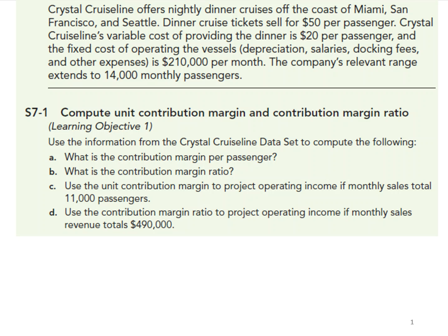Let's do a CVP analysis question. Crystal Cruise Line offers nightly dinner cruises off the coast of Miami, San Francisco, and Seattle. Dinner cruise tickets sell for $50 per passenger. Crystal Cruise Line's variable cost of providing the dinner is $20 per passenger, and the fixed cost of operating the vessels — including depreciation, salary, stocking fees, and other expenses — is $210,000 per month. The company's relevant range extends to 14,000 monthly passengers.